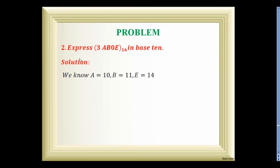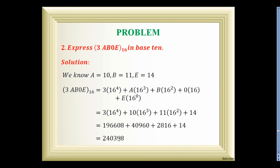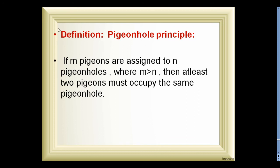Second problem: express 3AB0E in base 16 in base 10. We already know that A = 10, B = 11, and E = 14. So we write E×16⁰ + 0×16¹ + B×16² + A×16³ + 3×16⁴. Substituting the values of A, B, and E and computing, we get 240,398.